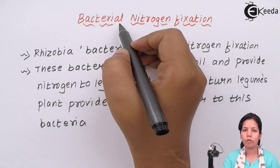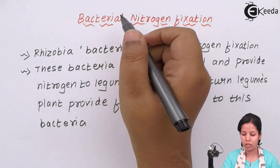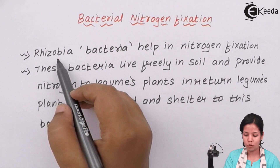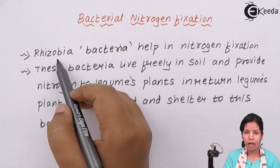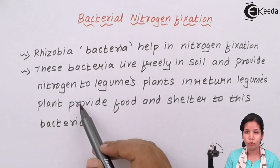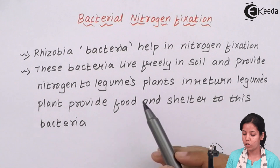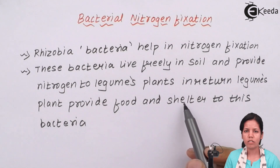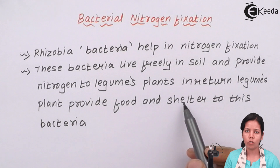Bacterial nitrogen fixation: Rhizobia bacteria, which is present inside the soil, catches atmospheric nitrogen and provides it to the plant. In return, the plant provides food and shelter to this bacteria, which is called a symbiotic association or give and take relationship.